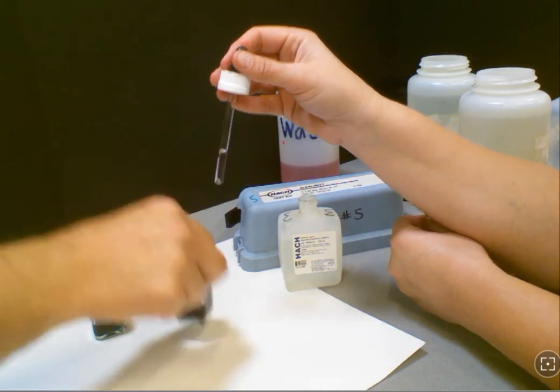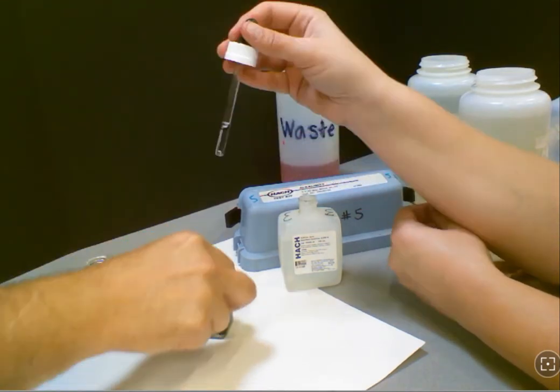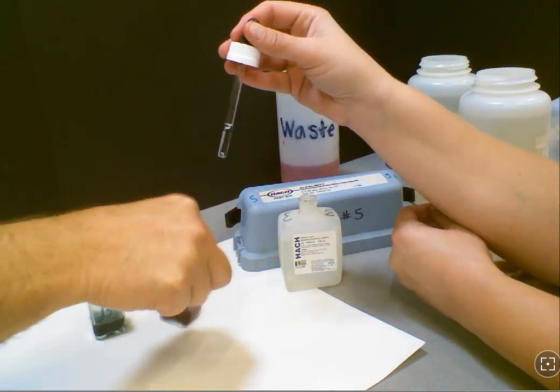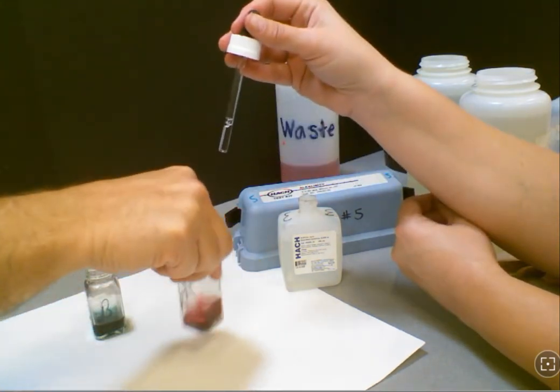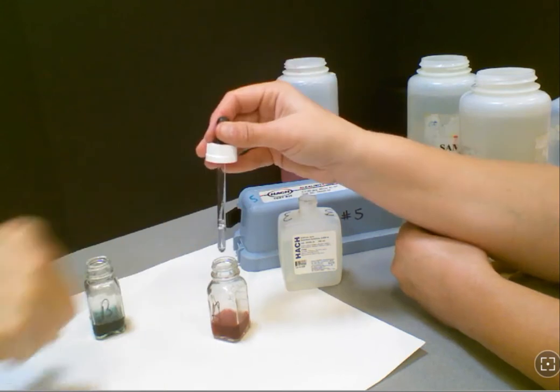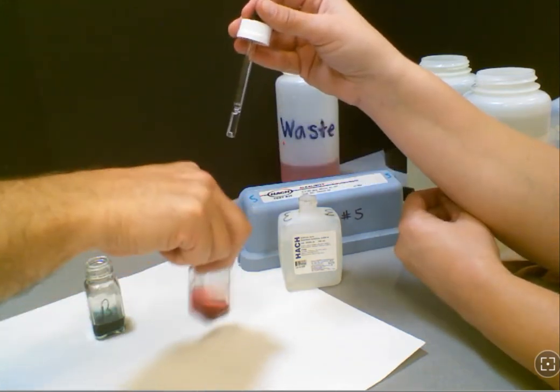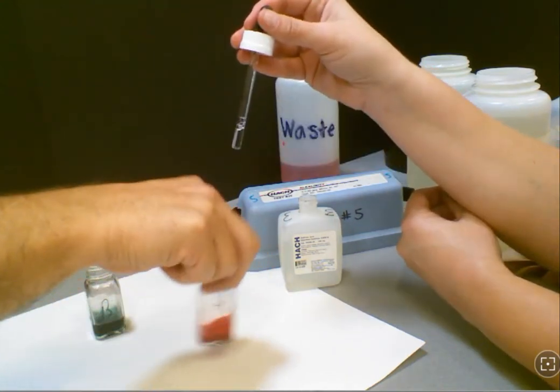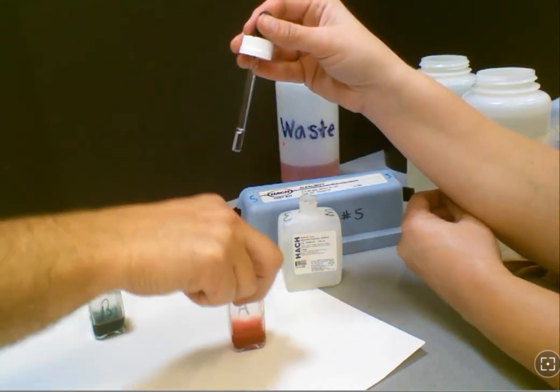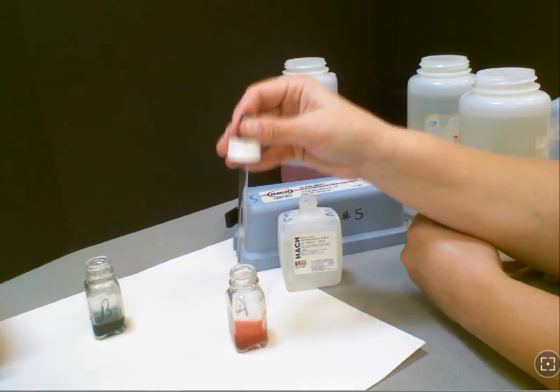The goal here is to titrate, and that is you're looking for a color change until it stops changing shades of pink. It's going to move through several color changes, as you can see on this video. And once you get to the very end, the very last drop that causes it to stop changing, that's the number you want. If you feel you've gone too far and you've added two drops and it stayed the same color, please subtract that drop from your total.